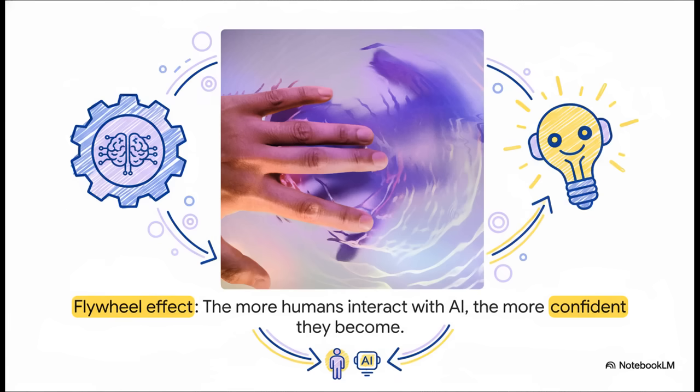And this, this right here, illustrates that idea perfectly. It's a flywheel. The more we work with AI, the better the AI gets. And the better the AI gets, the more confident we are using it. It just creates this amazing, self-reinforcing cycle, where both the person and the machine get smarter and better. That, right there, is co-learning in action.